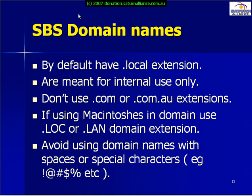When we choose an SBS domain, by default it ends up with a dot local extension. These are only meant for internal use. It's recommended that you don't use any normal internet domain names like dot com or dot com dot au. If you are using Macintosh machines, you may need to change from dot local to dot loc or dot lan to avoid conflicts with the Macintosh protocol. It's also recommended to avoid using special characters like dollar, hash, and so on when creating a domain name.